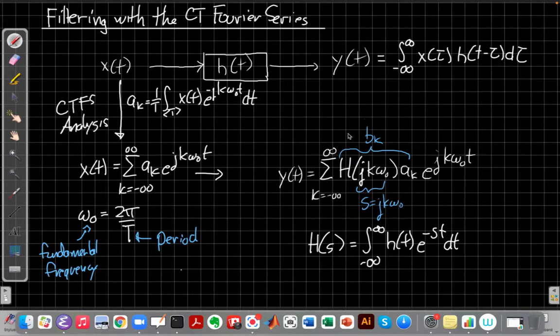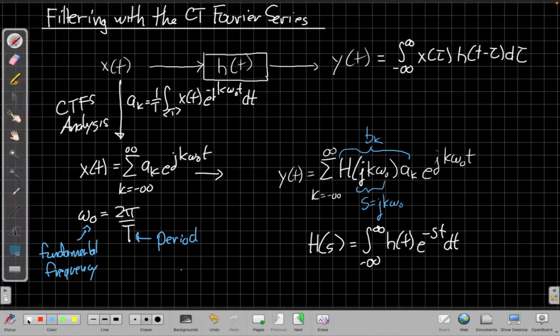And so now once I have it in this form, the last step would actually be given the b_k's, I would be evaluating this sum to get back to the time domain. So I'm not sure that I've drawn it the best way here, but it is what it is. All right, so the third step is evaluating this sum gets me back to the time domain.